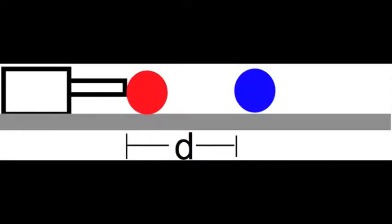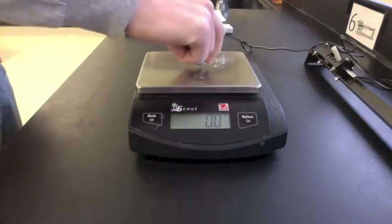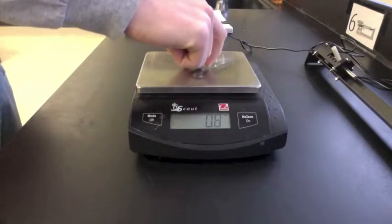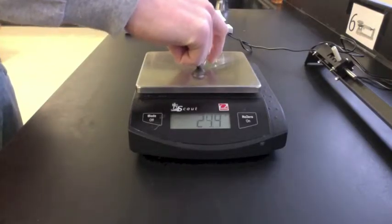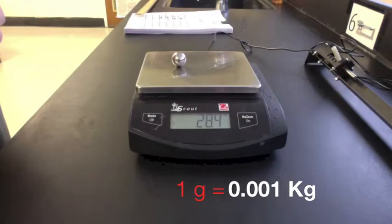Here's our setup. We're going to launch one marble at another marble, which is stationary, but they will be of equal mass. The small steel marble weighs 28.4 grams, which should be converted to kilograms.